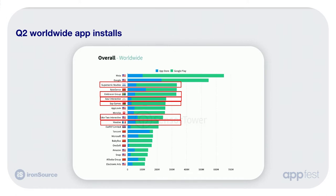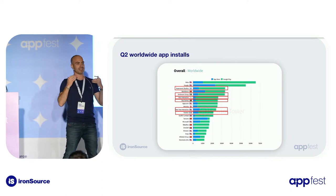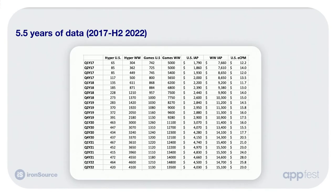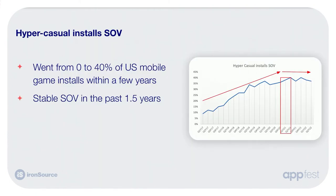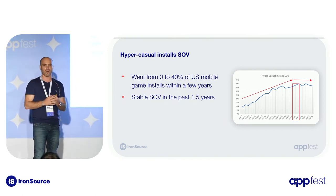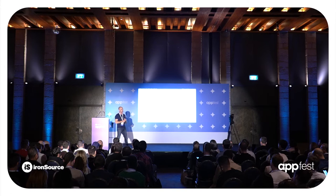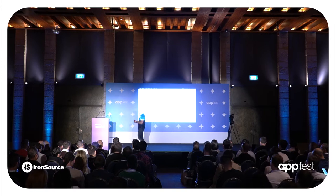Just a quick photo to show how big hypercasual is. This is Q2 worldwide installs in the app economy. You can see that besides the big social platforms — Meta, Google, and TikTok — the biggest and most installed publishers are hypercasual. Supersonic is the biggest, but even looking at the others, it's a big chunk of what users downloaded in Q2 this year. We analyzed different trends in mobile games and hypercasual specifically in the past 5.5 years from January 1st, 2017 until today.